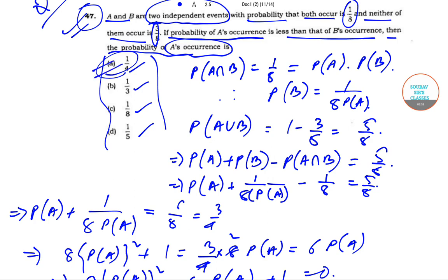So today we have solved question number 47 from the JNU School of International Studies MA Economics question paper of year 2016. We will be solving the next questions in the subsequent videos. Till then keep watching subsist classes videos for more solutions and content. Thank you very much.